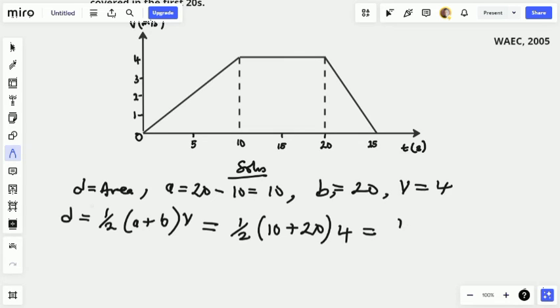So when you do that, that will be 1/2, 10 plus 20 is 30, times 4. So 2 cancels to 1, 4 cancels to 2, times 2 times 30 is 60. So the total distance covered in 20 seconds of the motion equals 60 meters.